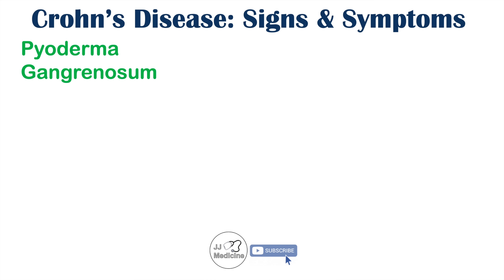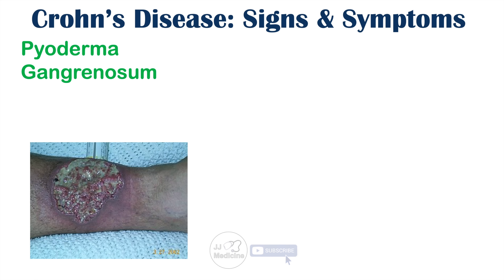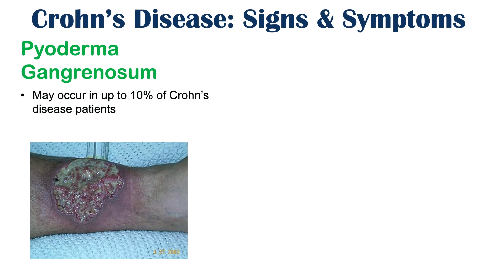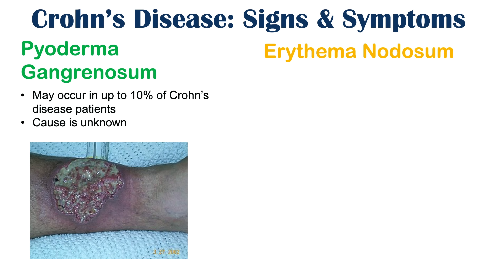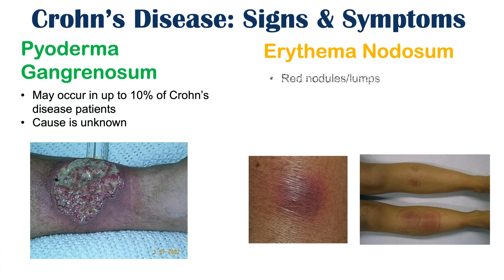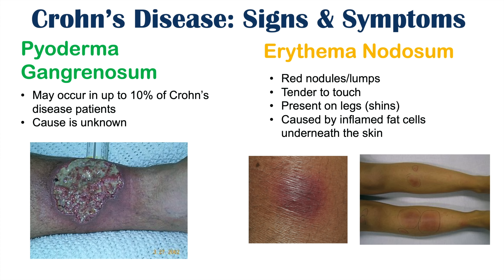There are important skin findings as extra-intestinal manifestations of Crohn's disease. Pyoderma gangrenosum may occur in up to 10% of Crohn's disease patients, and its cause is unknown. Erythema nodosum can also be seen — these are red, tender nodules or lumps present on the legs, most often on the shins, caused by inflamed fat cells underneath the skin. These are two key skin findings in Crohn's disease patients.